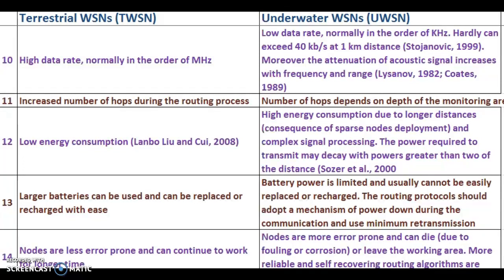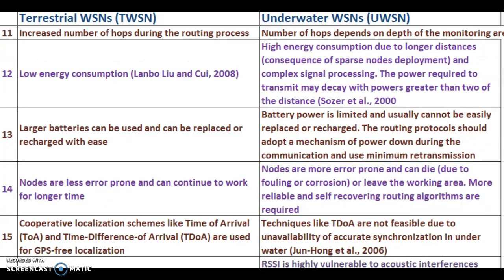Point 12: In TWSN, low energy consumption is typical. In UWSN, there is high energy consumption due to longer distances and complex signal processing. The power required to transmit may decay with powers greater than two of the distance. Point 13: In TWSN, large batteries can be used and can be replaced or recharged with ease. In UWSN, battery power is limited and usually cannot be easily replaced or recharged. The routing protocol should adopt a mechanism of powering down during communication and use minimum retransmission.